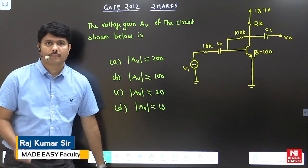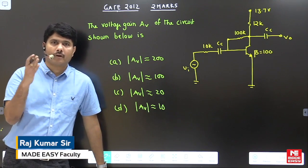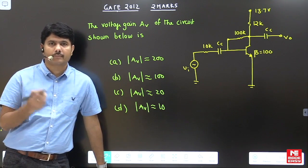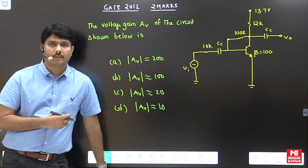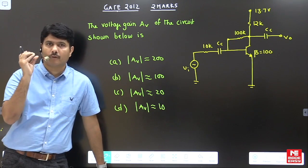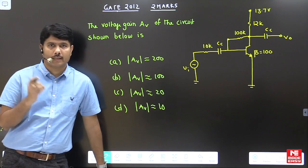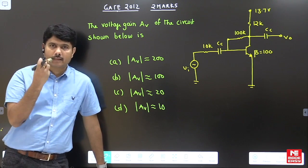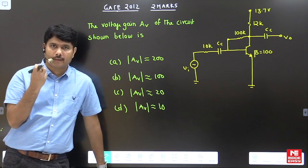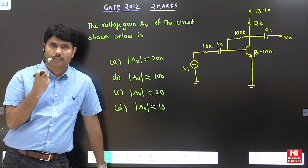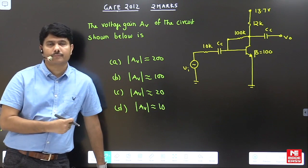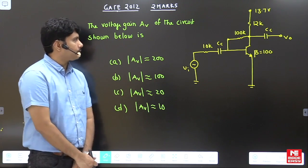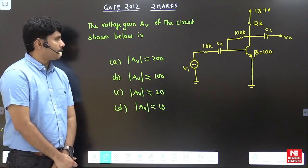There will be some source resistance, so whenever you see a capacitor with a 10k resistor afterwards, just move the 10k before the coupling capacitor and assume that is your source resistance Rs. Generally, source resistance is practically a very small value like 100 ohms, but in this question they have taken a very large value of 10k, such that when you find the gain from the source, the attenuation will be more and you will get a very small gain. This is the story of the circuit - the voltage gain Av of the circuit is what's being asked.